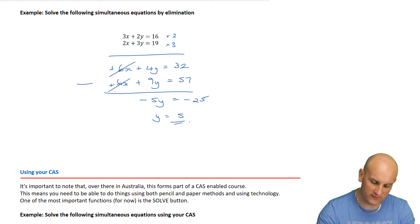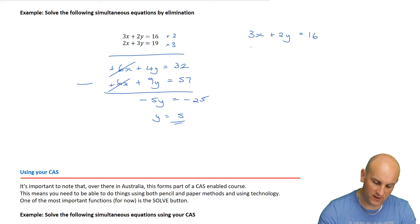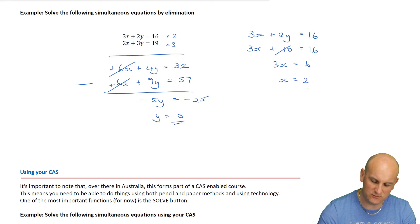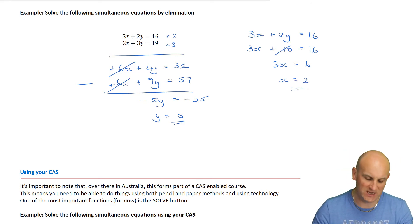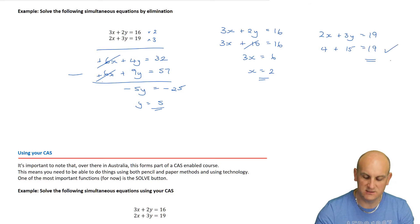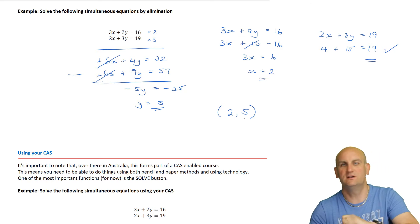I've got y equals 5. How do I find x? Substitute back into the first equation: 3x plus 2y equals 16. We know y is 5, so 3x plus 10 equals 16, giving 3x equals 6 and x equals 2. Checking: 2 times 2 plus 3 times 5 is 4 plus 15 equals 19. Correct! Expressing my answer as a coordinate.